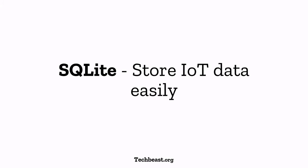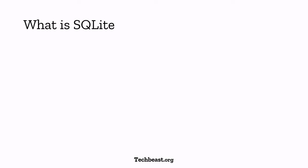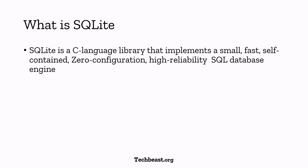So what is SQLite? Basically, SQLite is a C language library that implements a small, fast, self-contained database. Self-contained means it does not need any client-server kind of communication — all the database is available as a single file stored in your local machine. You don't need to do any kind of configuration. SQLite is completely a zero-configuration database engine and it's highly reliable.